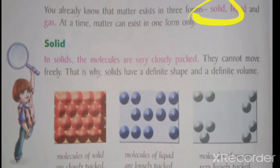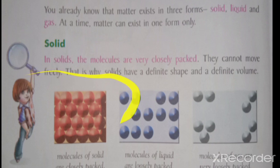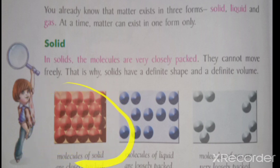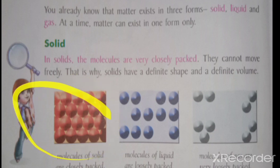Matter exists in three forms: solid, liquid, and gas. At one time, matter exists in one form. In solids, molecules are closely packed — there is no space for the molecules to move. Solids have a definite shape and are rigid.